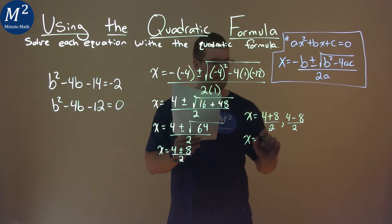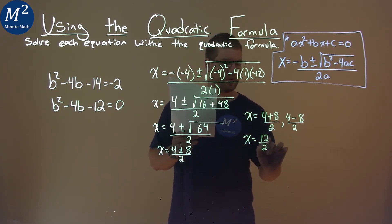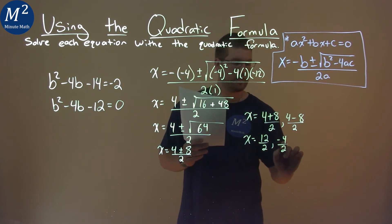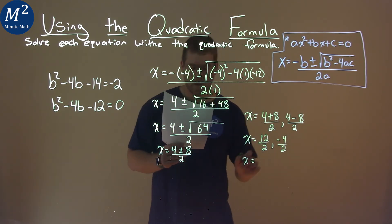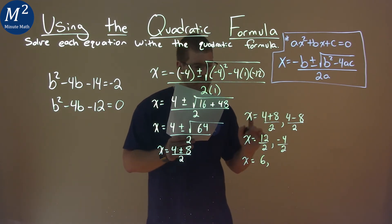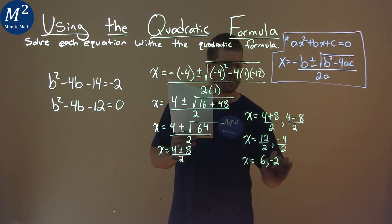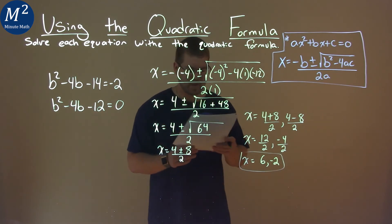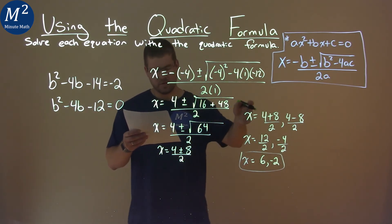4 plus 8 is 12 over 2, and 4 minus 8 is negative 4 over 2. Keep this going, 12 divided by 2 is 6, and negative 4 divided by 2 is negative 2, and so my two answers here are x equals 6 and negative 2.